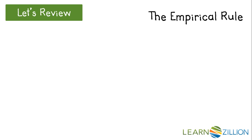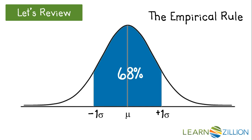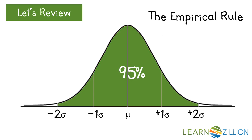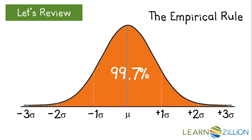Also recall that the empirical rule tells us that if you have a distribution that's approximately normal, then about 68% of the data will fall within one standard deviation of the mean, about 95% within two standard deviations, and almost all the data — about 99.7% — will fall within three standard deviations of the mean.